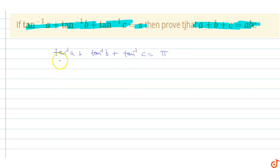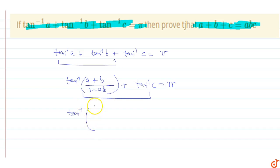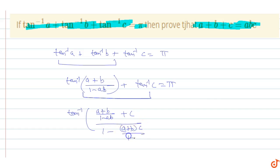So tan inverse a plus tan inverse b — we know that tan inverse of (a + b) upon (1 minus ab) — plus tan inverse c equals pi. So this becomes tan inverse of (a + b) upon (1 minus ab). Using the tan(a + b) formula: tan(a + b) upon (1 minus ab), this equals (a + b upon 1 minus ab) plus c upon 1 minus (a + b) times c upon (1 minus ab), which equals pi.